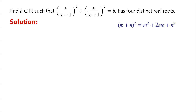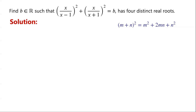So we add 2·[x/(x−1)]·[x/(x+1)] and minus 2·[x/(x−1)]·[x/(x+1)] on the left-hand side of the equation. Note that [x/(x−1)]·[x/(x+1)] equals x²/(x²−1).